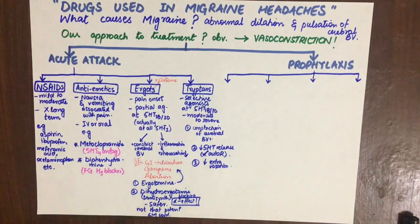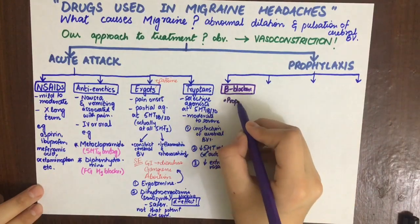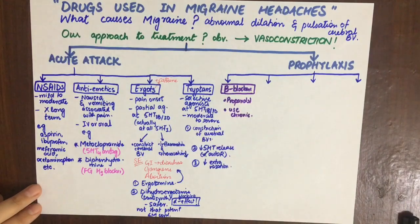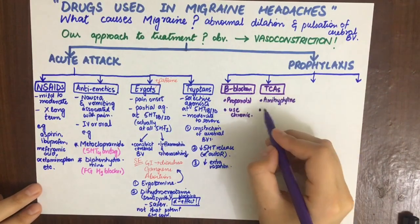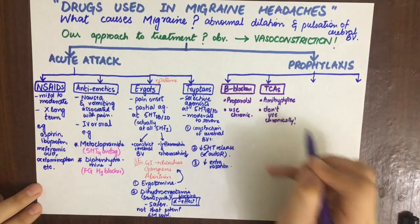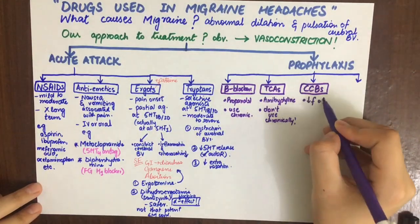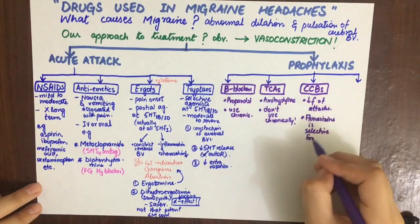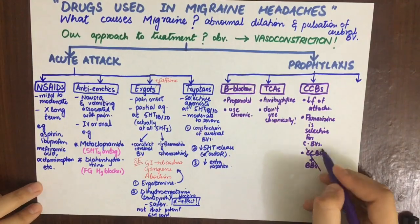The drugs used for migraine prophylaxis include beta blockers such as propranolol, used chronically. Their mechanism is unknown but may involve beta-2 blockade, without which beta-2 causes vasodilation. Tricyclic antidepressants like amitriptyline are also used, but should not be used for a prolonged period. Calcium channel blockers such as verapamil and flunarizine are also used; flunarizine is preferred because it is selective for cerebral calcium channels. These should not be given with beta blockers.